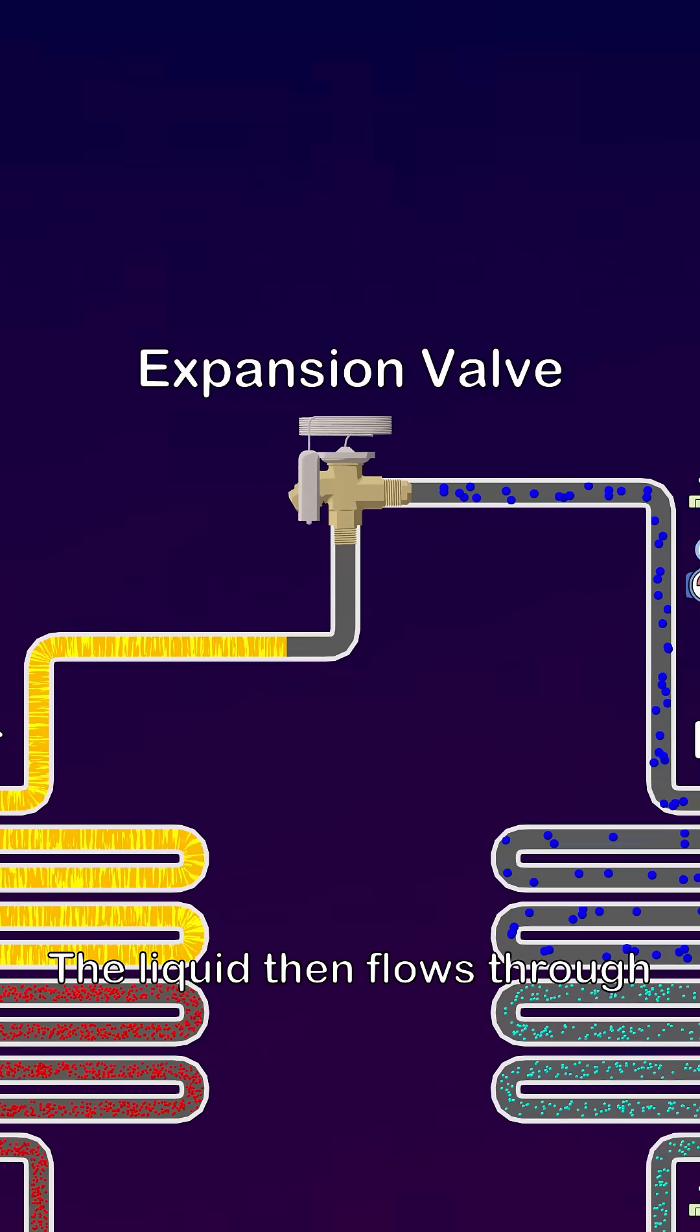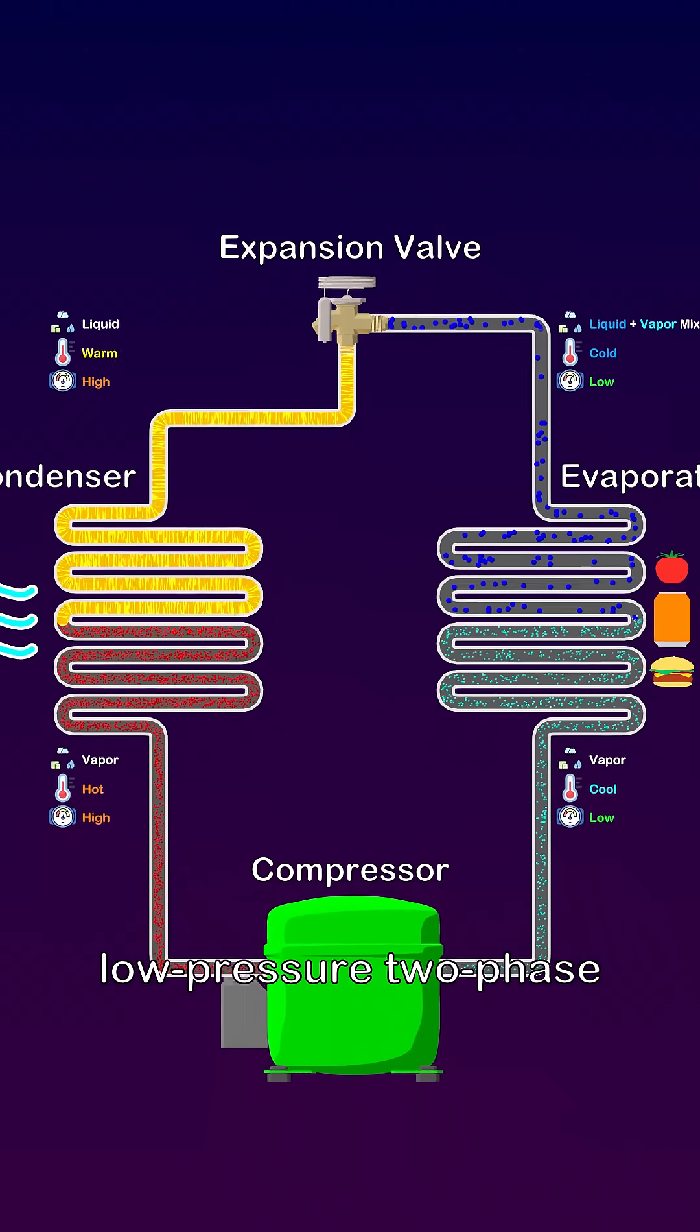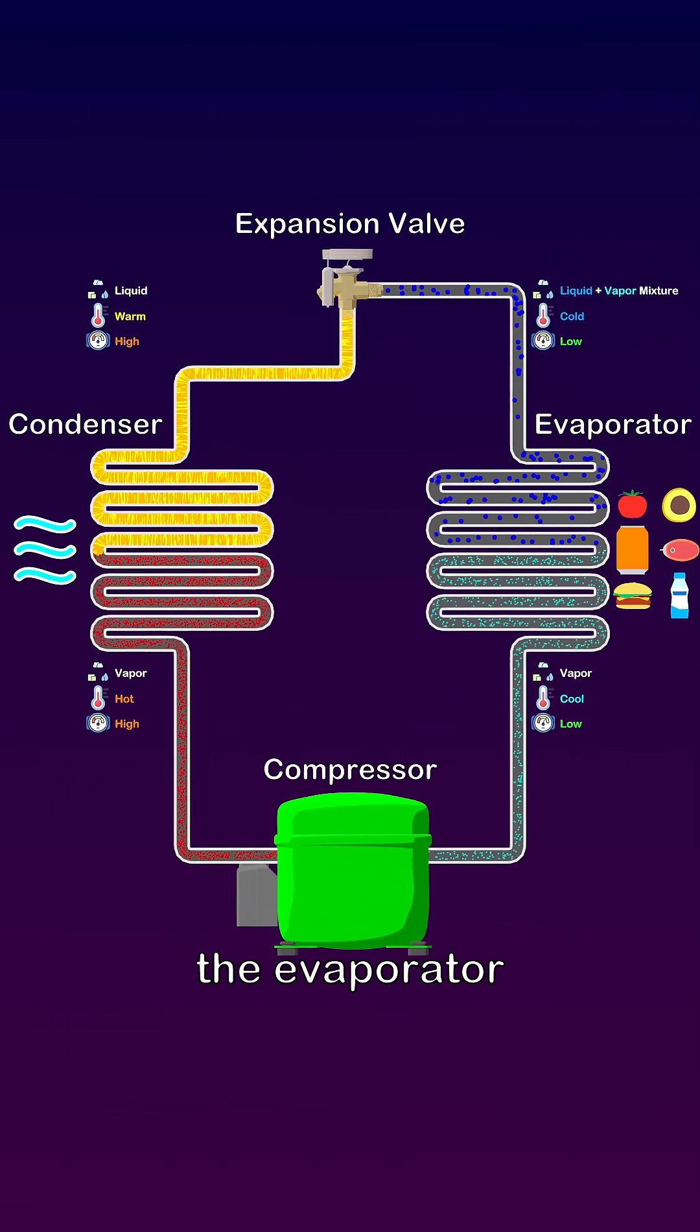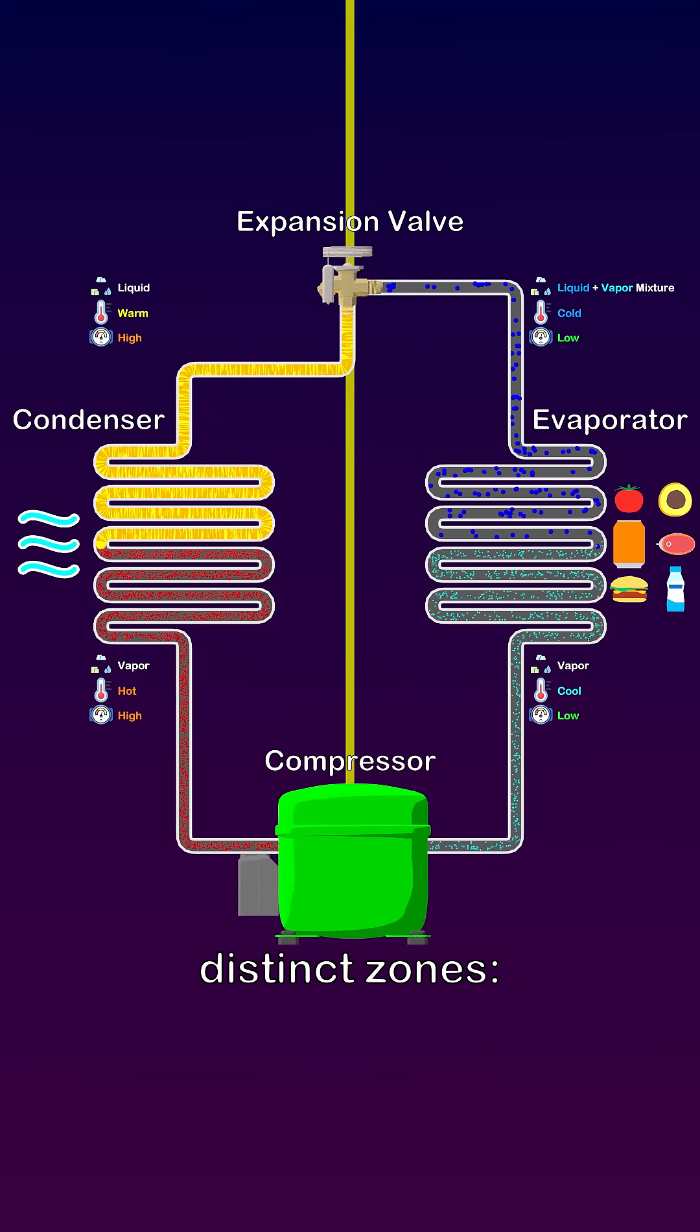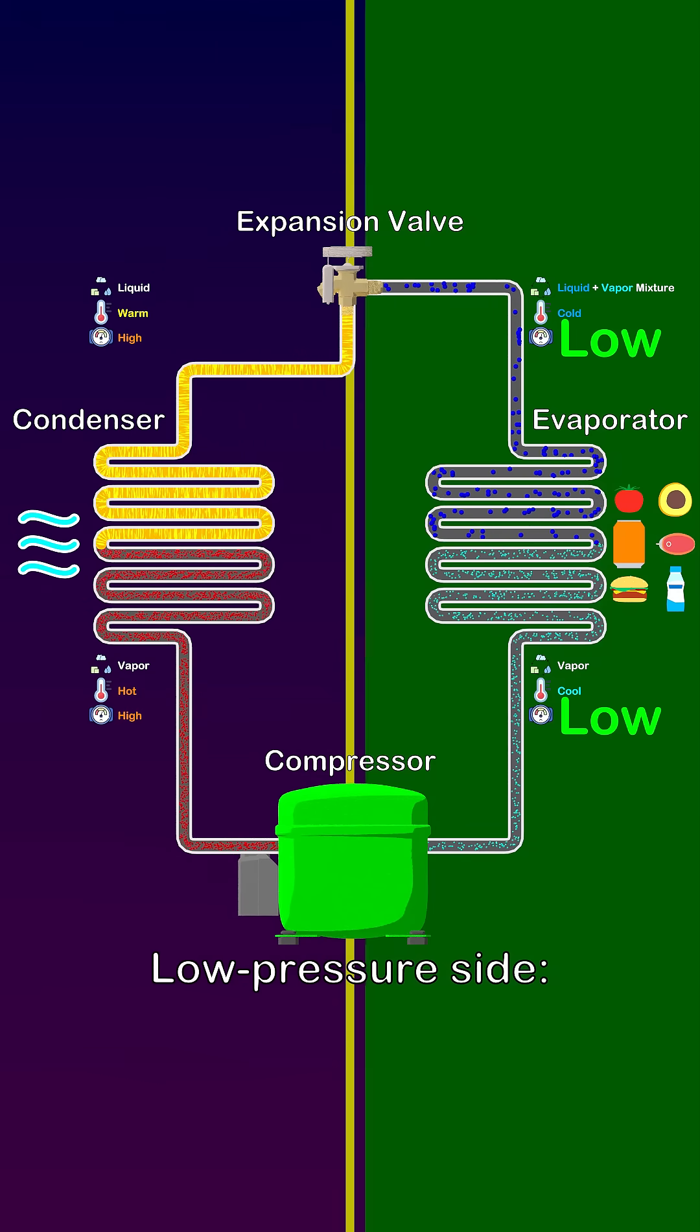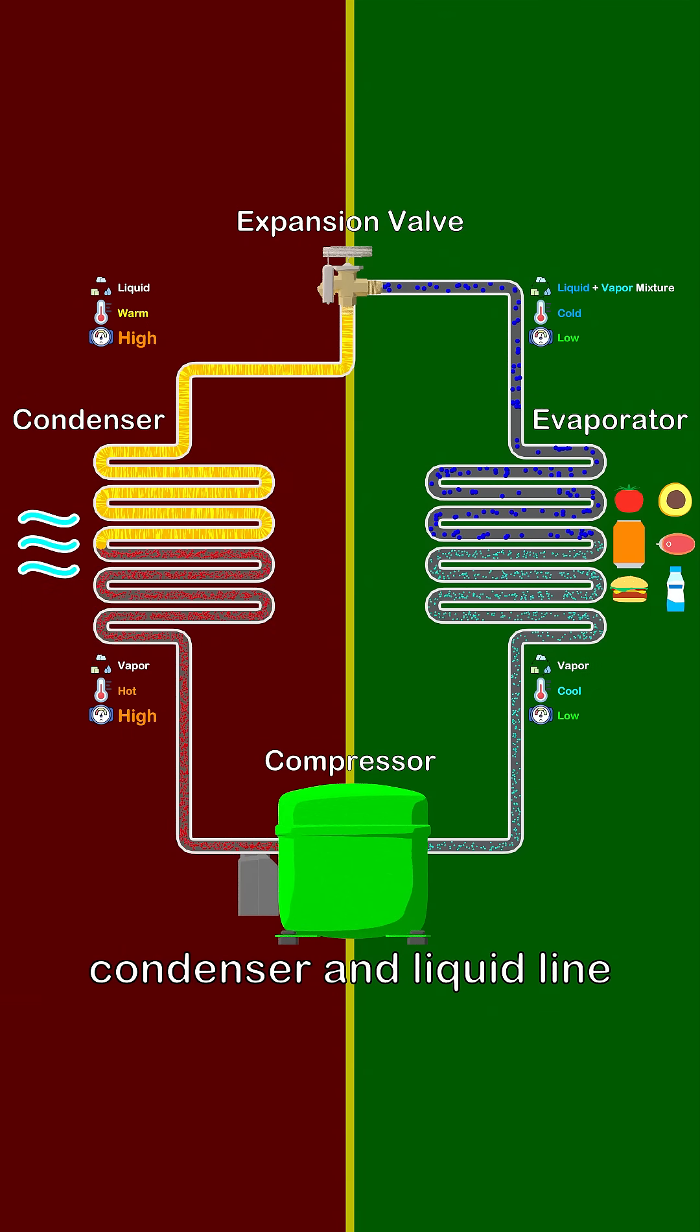The liquid then flows through the expansion valve, where it undergoes a sudden pressure drop and becomes a cold, low pressure two phase mixture, which is sent back into the evaporator. The compressor and expansion valve divide the system into two distinct zones. Low pressure side: evaporator and suction line. High pressure side: condenser and liquid line.